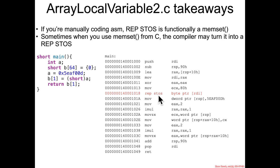repstoss is basically a memset in a box, and that memset is being used in furtherance of zero-initialization, setting all of B[64] to zero.